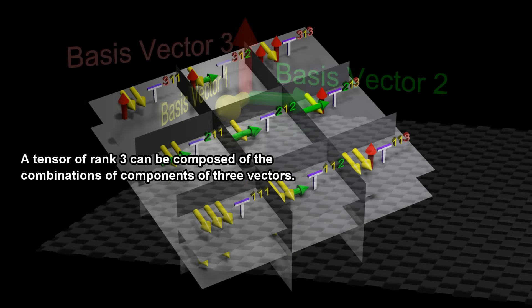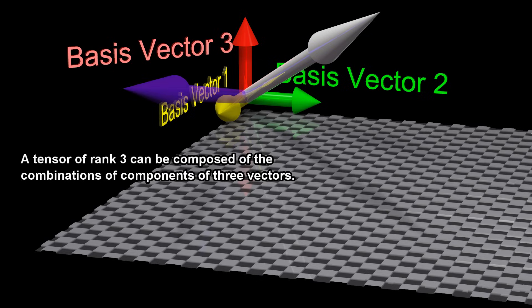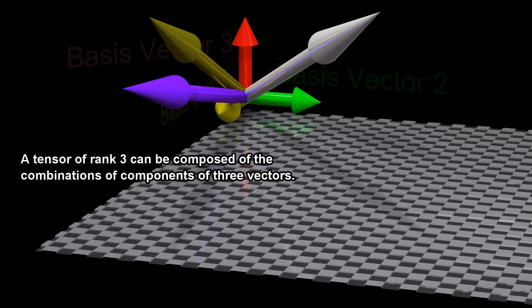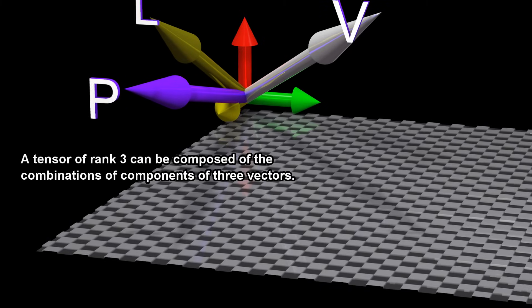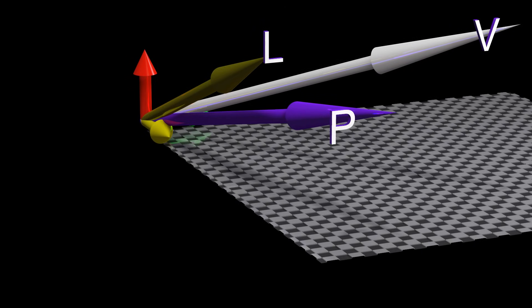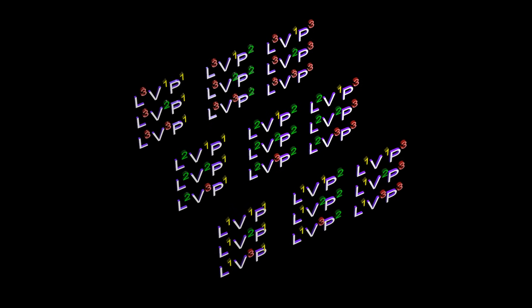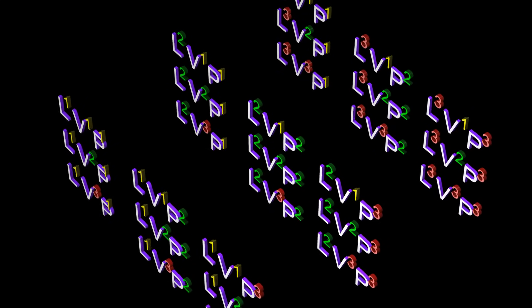A tensor of rank 3 can be composed of the combinations of components of three vectors. We can create different descriptions of this tensor by using different combinations of contravariant and covariant index values for the components of the three vectors.